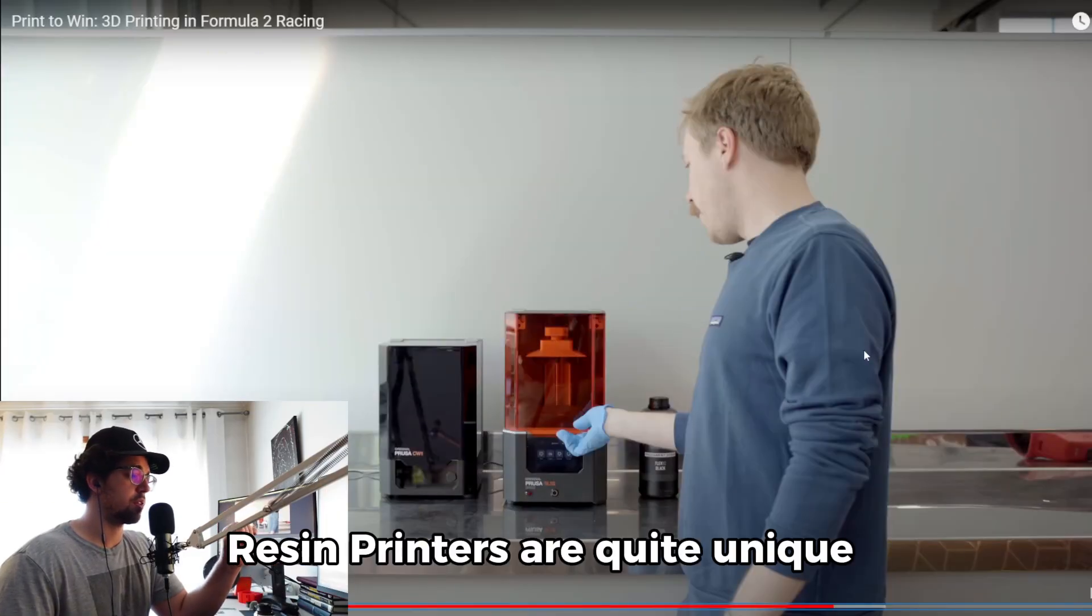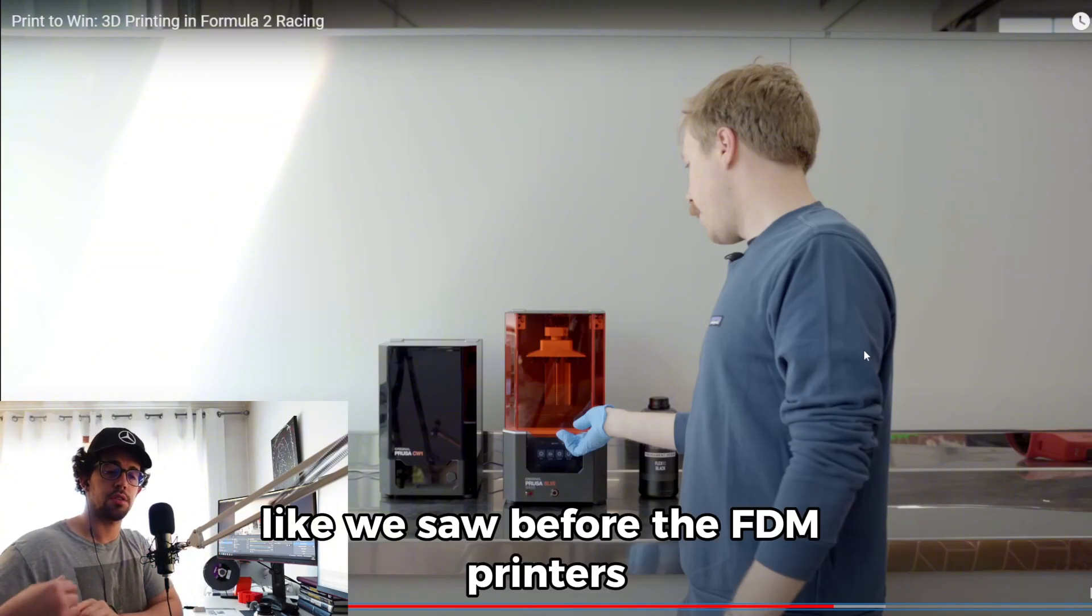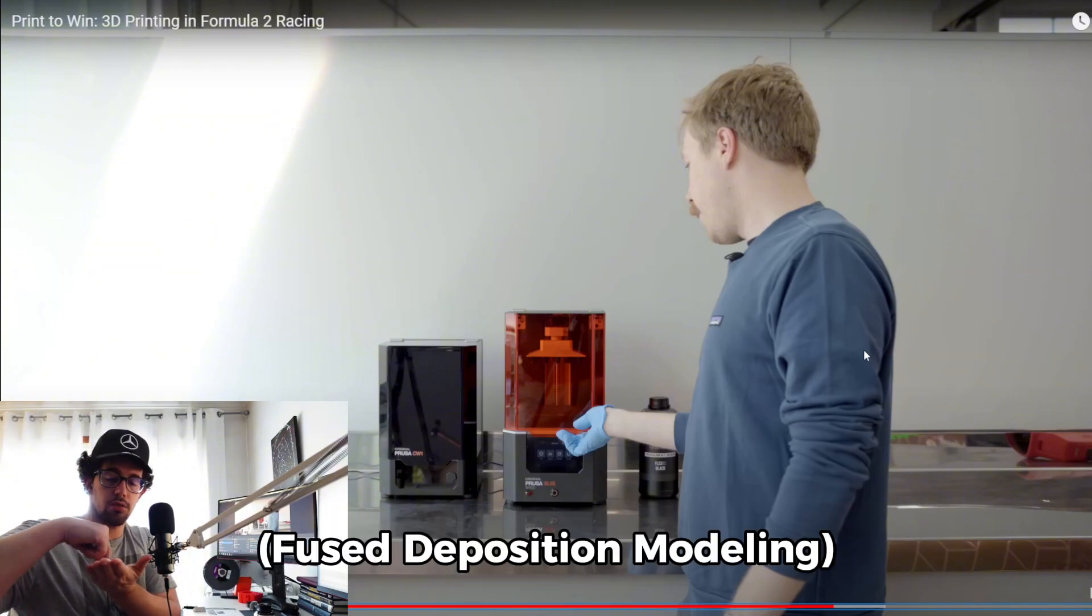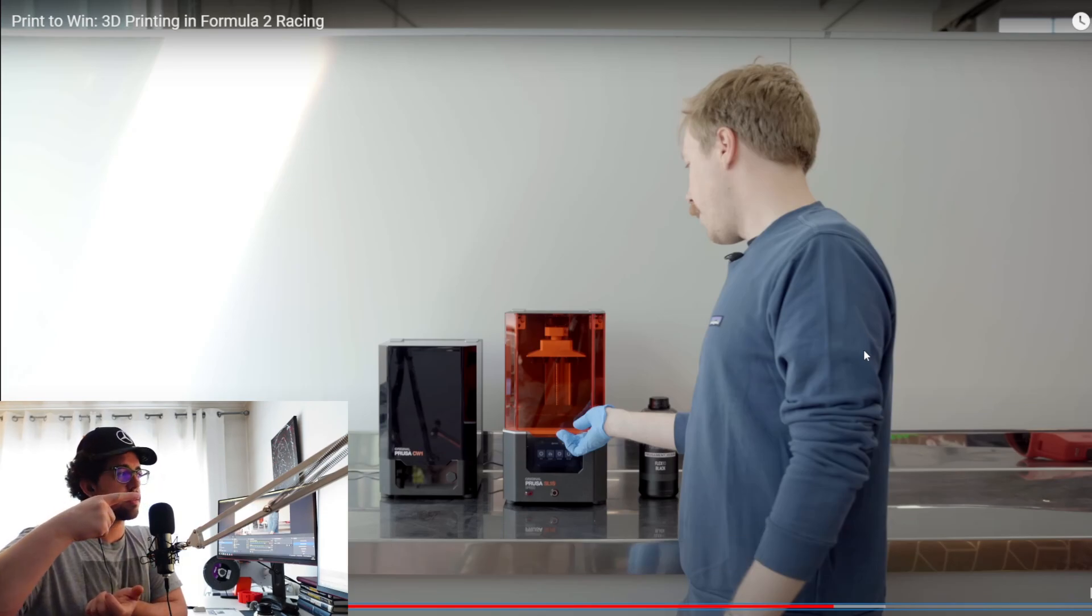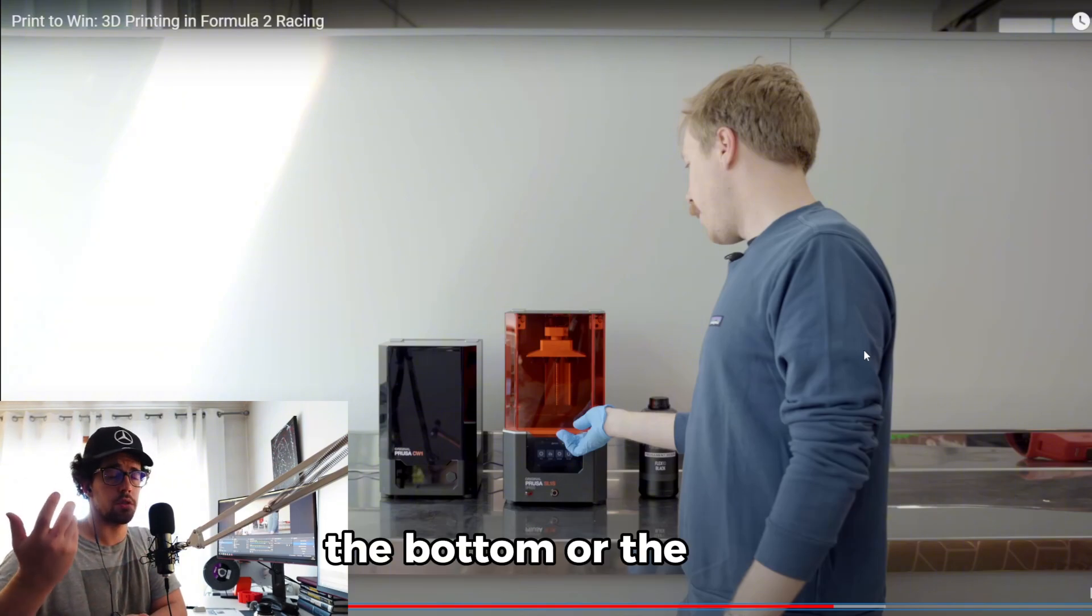Resin printers are quite unique. The difference from the normal printers like we saw before, the FDM printers. The FDM printers need to lay a layer, layer by layer. In this one you have a build plate with some liquid resin on the bottom or the top, and you have some UV that cures each layer.